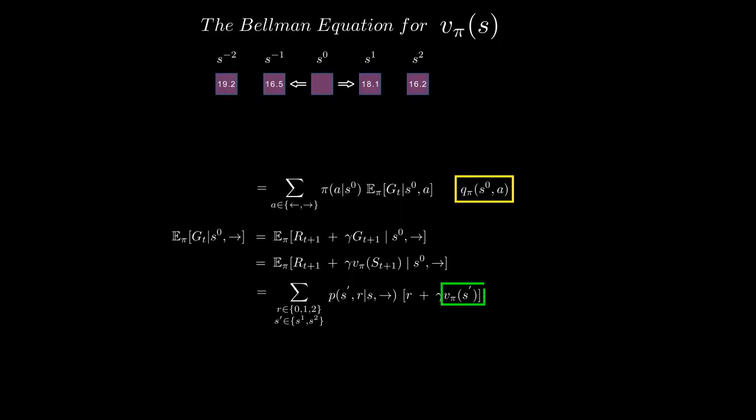And we can do this exact same thing for the left action. That would give us all the numbers for this, which means we have everything we need to calculate our answer. And this is what our Bellman equation does for us. It connects state values. In fact, it connects all state values. This means if we can solve for some state values, we can solve for others.